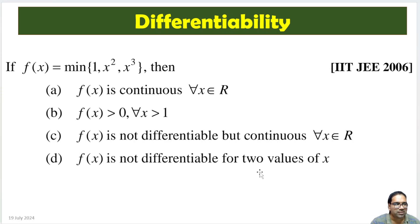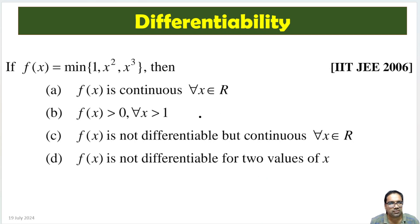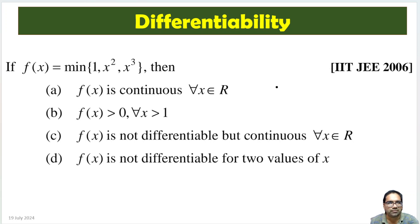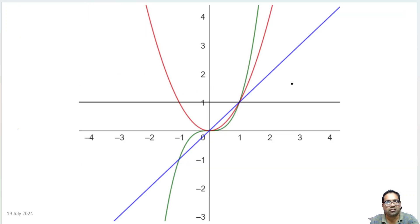We have the function minimum of 1, x squared, and x cube. We have to discuss the continuity and differentiability of this function. Let us draw the graph of this — it looks like this.